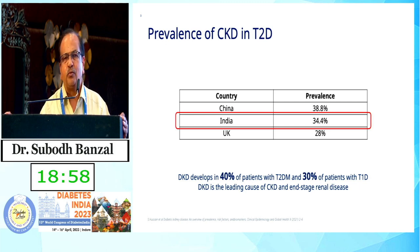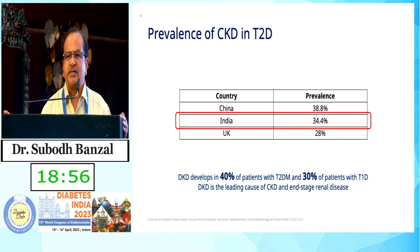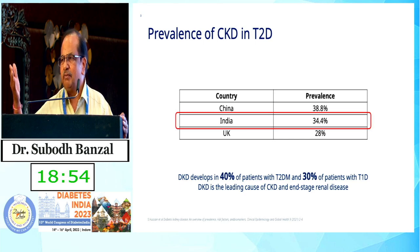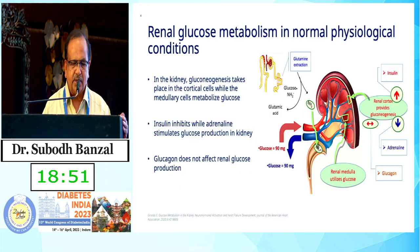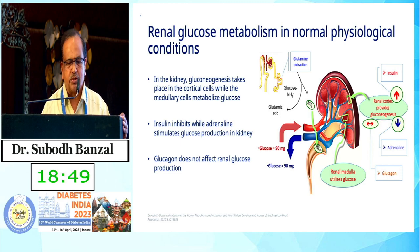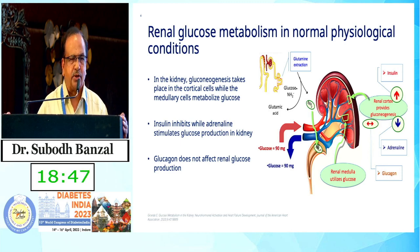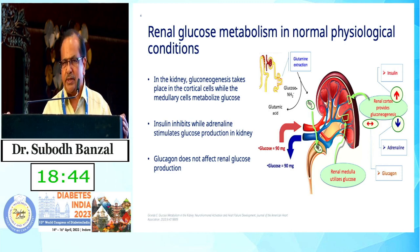Almost 40 percent of type 2 diabetics and 30 percent of type 1 diabetics have CKD or DKD, typically after 10 to 15 years of their diabetes.